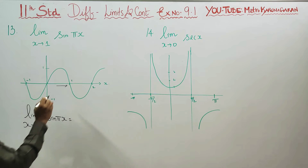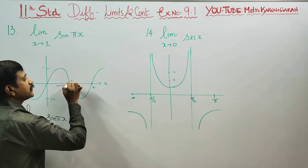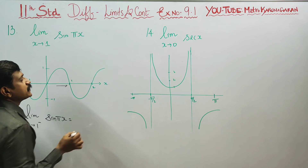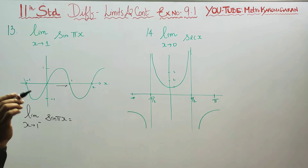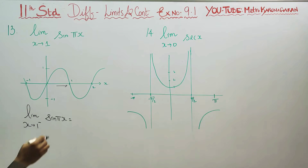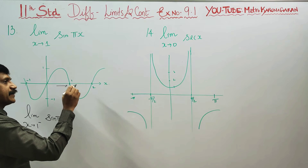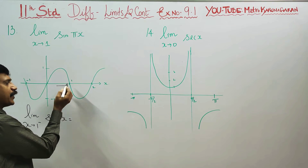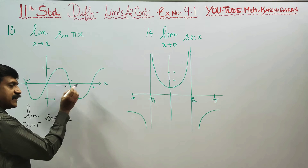If you hold the left-hand side approach, for example at the point, we write values like 0.9, 0.99, 0.999, and so on — points very close to 1 from the left. You need to write these values approaching the point.